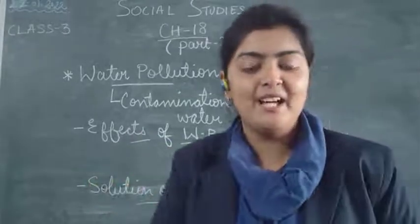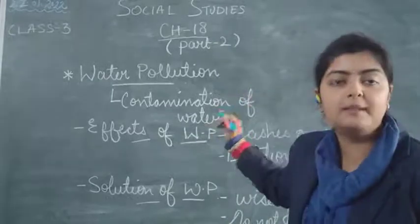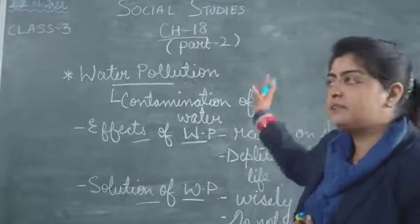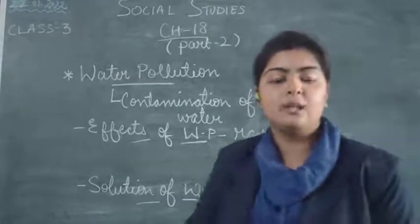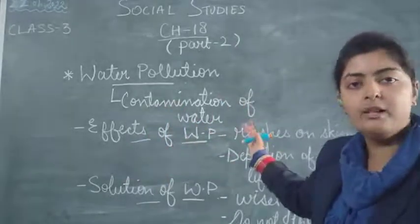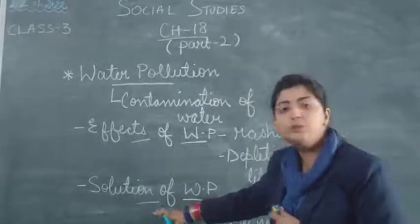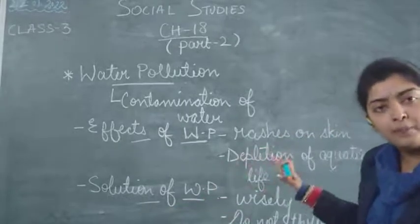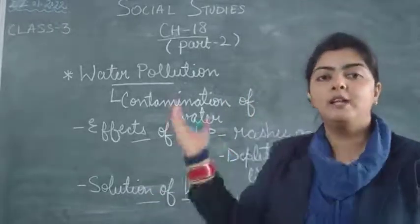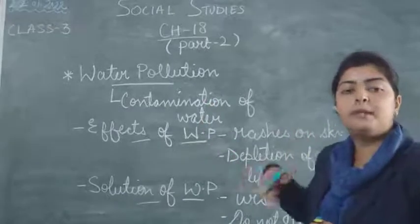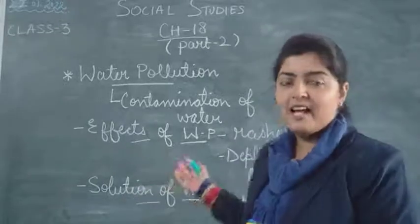That's all we have for today. I hope you understood this chapter. This is part 2 of chapter 18, Environment and Pollution. Part 1 was air pollution and part 2 is water pollution. I hope what is water pollution, its effects, and its solutions are clear to you. If not, write in the comment section below and we will explain it to you in a better manner. Thank you for listening carefully. Have a nice day.